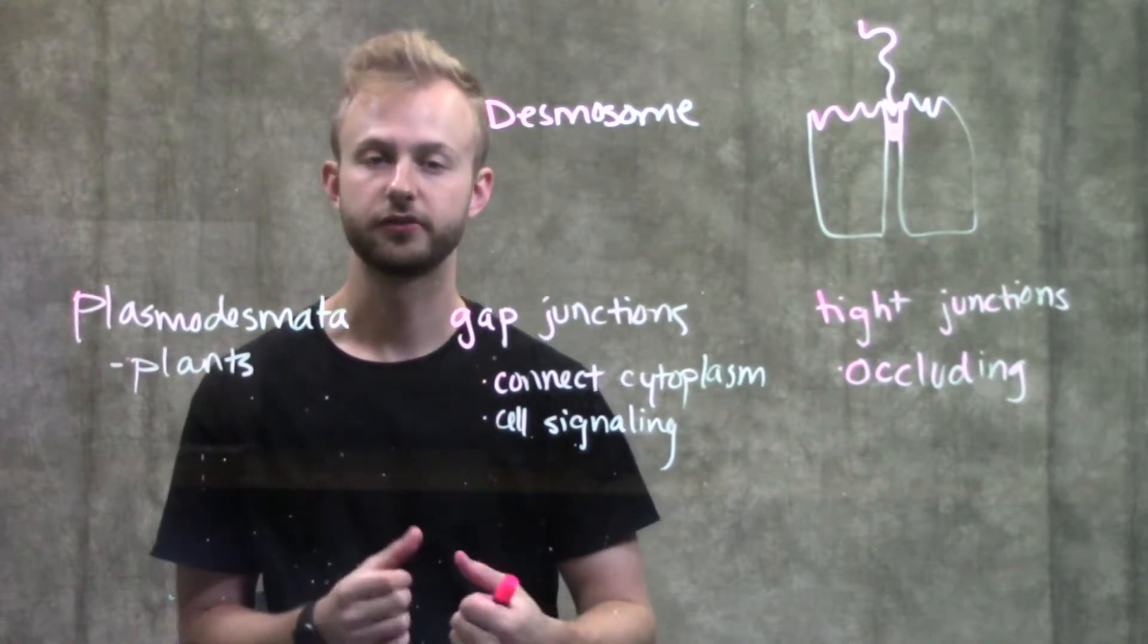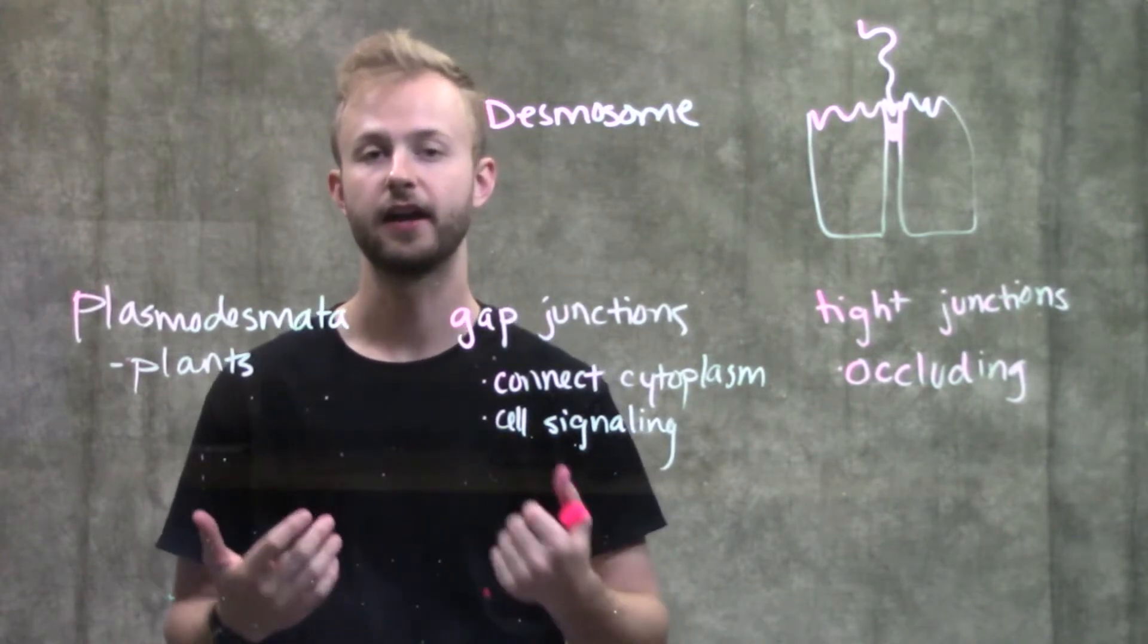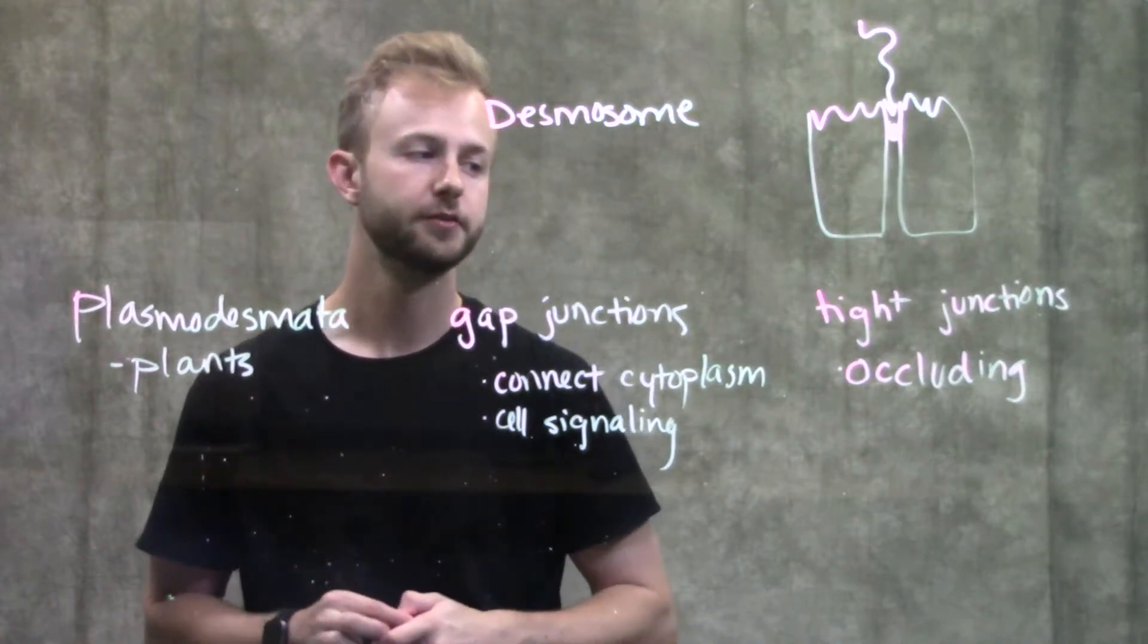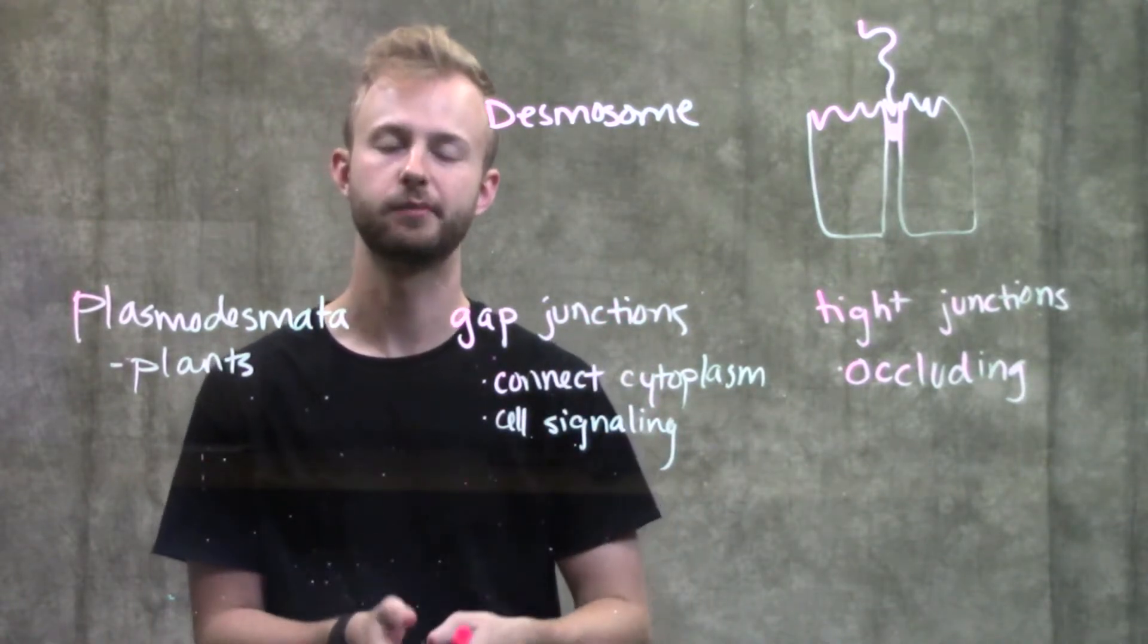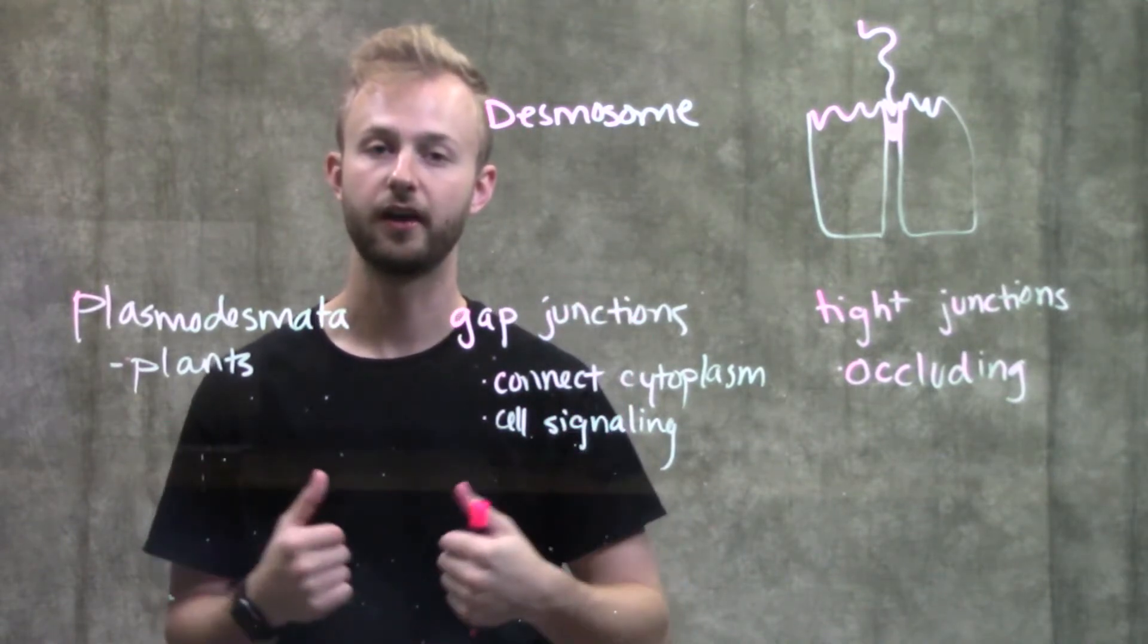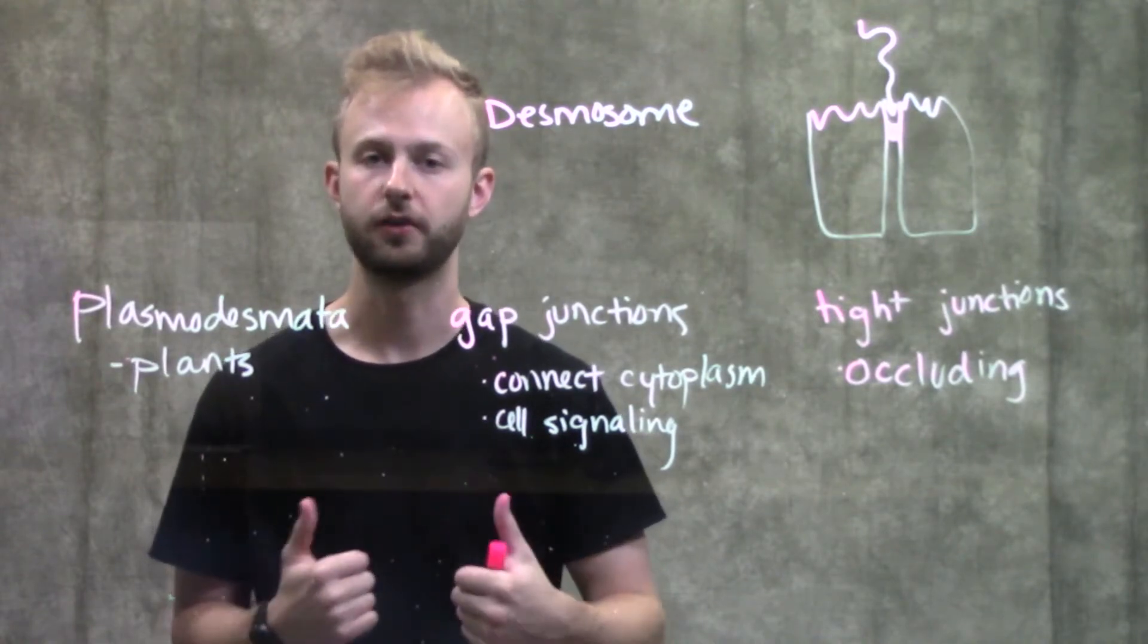You see them a lot between muscle cells to allow those muscle cells to pull apart and then come back together as we extend our muscles. Desmosomes are not occluding, so things can go between cells that are only connected by desmosomes, but they are very flexible and help to hold our muscles together while still allowing some mobility.